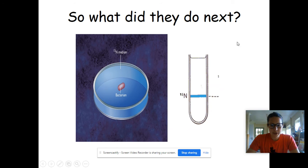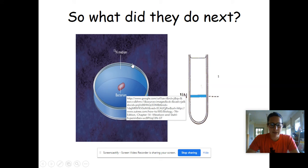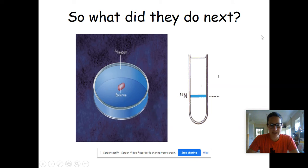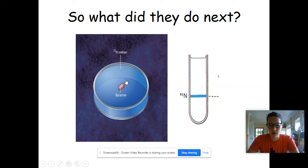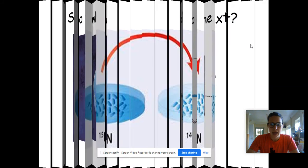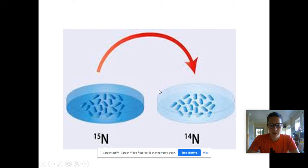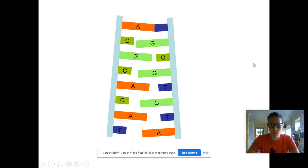So what they did to start off with is they grew some bacteria in a medium that was exclusively nitrogen-15. So all of the biological molecules in those bacteria and all the DNA, all the amino acids would be this heavy form. And then those bacteria were transferred into an agar dish with nitrogen-14 and they were allowed to replicate just once.